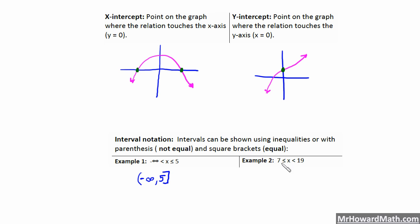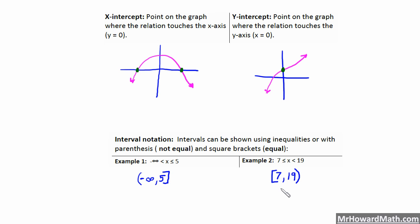Now let's look at this example: x is greater than or equal to 7 but less than 19. In interval notation, we write the smallest value on the left — 7 — comma the largest on the right — 19. Since we're greater than or equal to 7, that means 7 is included so we put a bracket around 7. 19 is not included since there's no equal-to bar, so we put parentheses. We're going to use this notation a lot moving forward.